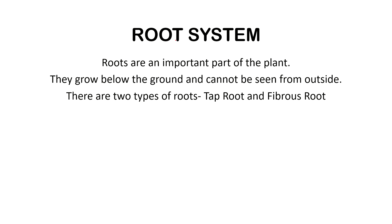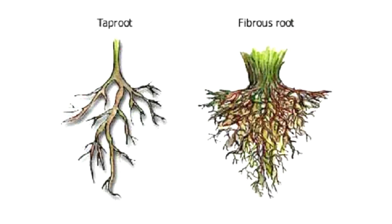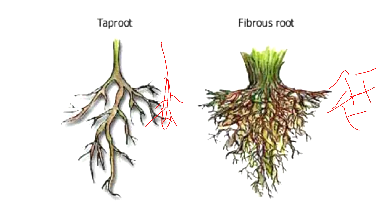The root system grows below the ground. There are two types of roots — the first is the tap root and the other is the fibrous root. The basic difference is that a tap root has one main central branch, while a fibrous root spreads out in all directions and has no single main branch.